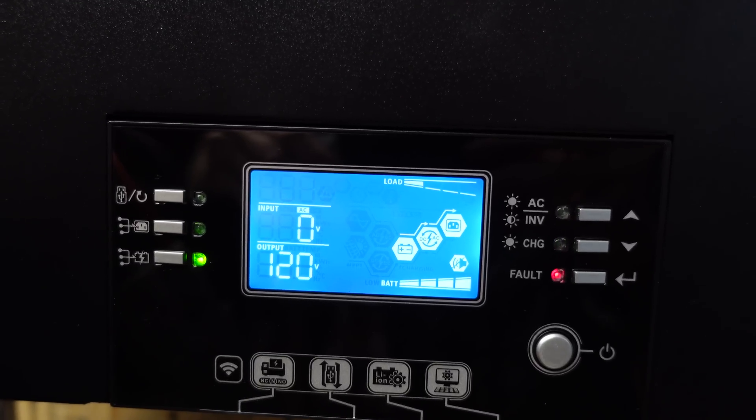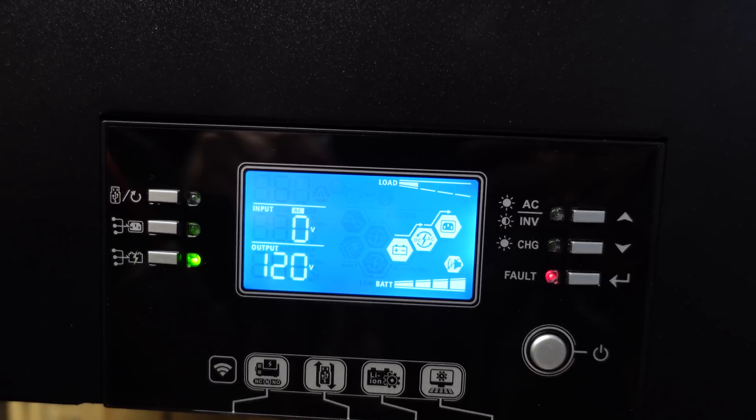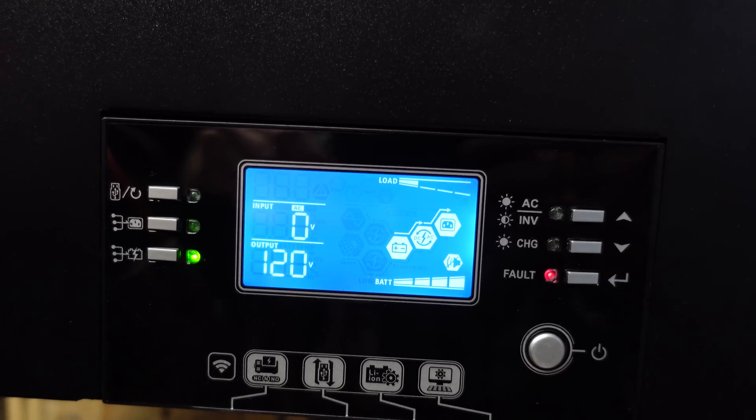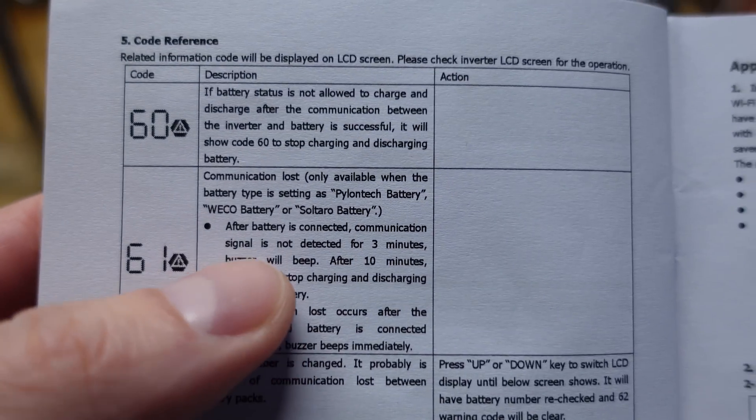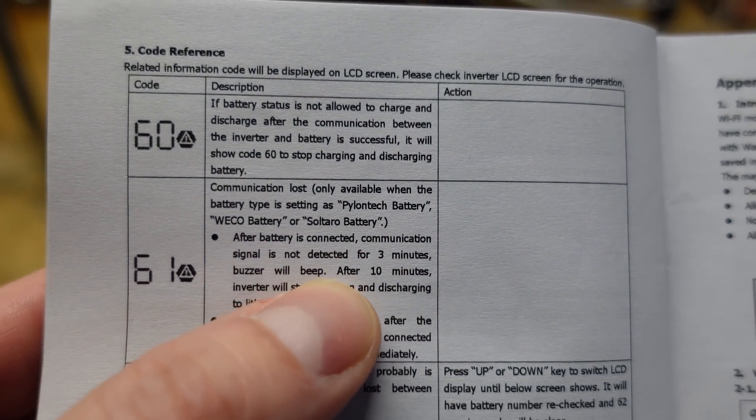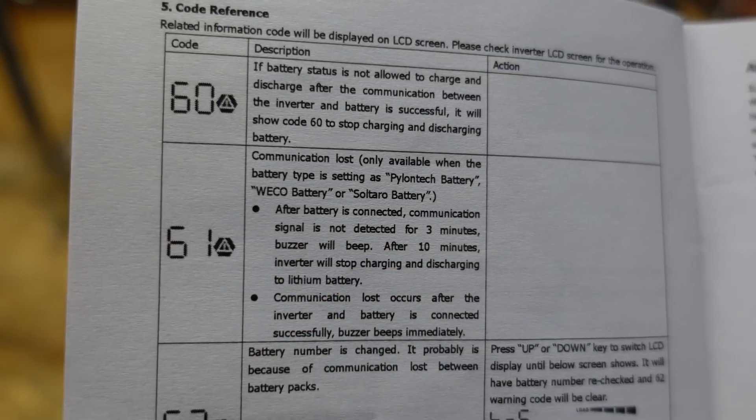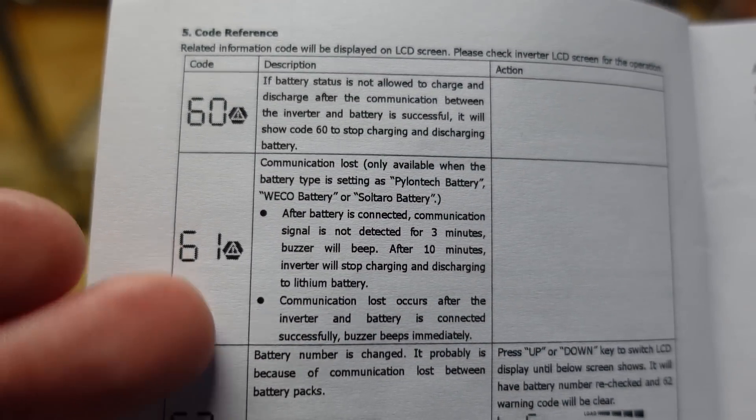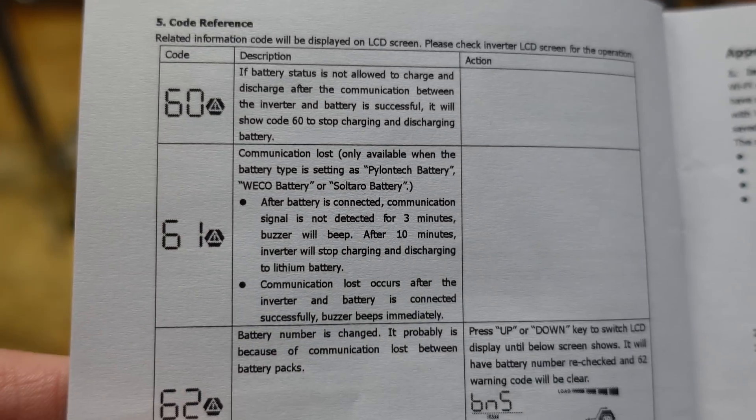Now, after a few minutes, you can see we have code number 61, a fault state flashing on the inverter. Back to the inverter manual. Code number 61 occurs when communication signal is not detected for three minutes. After 10 minutes, the inverter shut down, and the inverter does indeed shut down if I leave it wait for that 10 minute period.